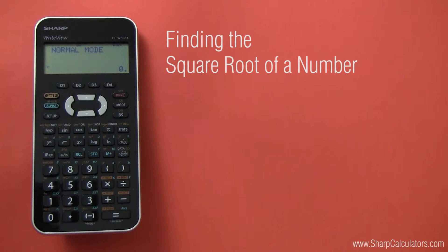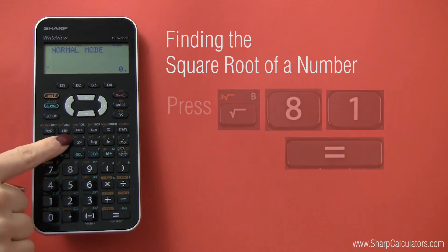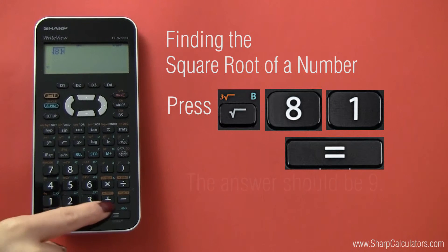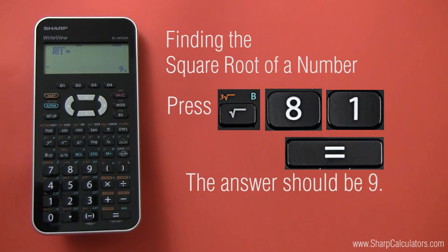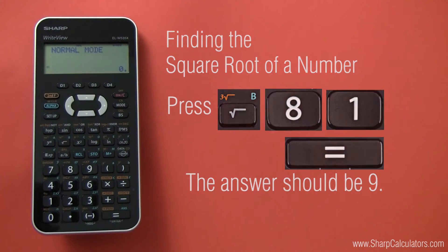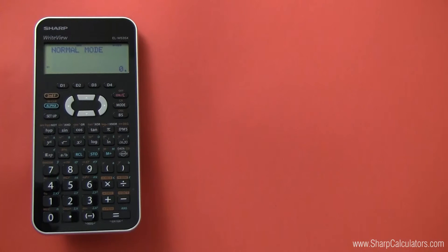To find the square root, press the square root button, your desired number, then the equal sign. For our example, we found the square root of 81, which is 9. If you get another answer, recheck your calculator settings and entry method, and try again.